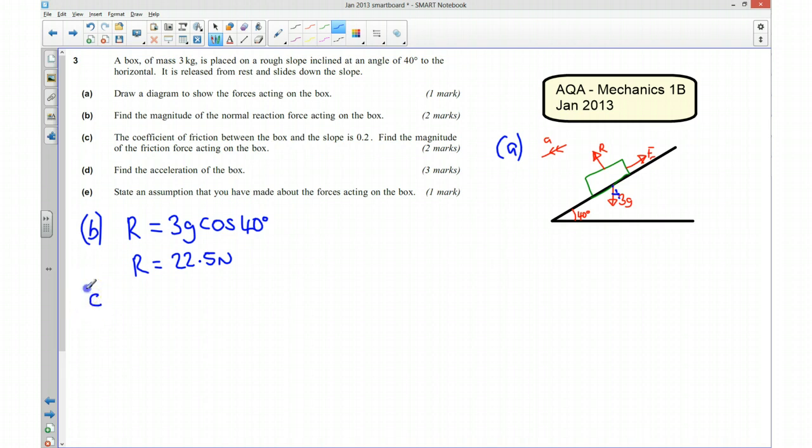Okay, for part C, we need to find the coefficient of friction between the box and the slope. So, sorry, we're told that the coefficient of friction between the box and the slope is 0.2. We want to find the magnitude of the friction force acting on the box. So, I'm going to write down that the frictional force, and because there is motion there, it's going to be at its maximum. So it's going to be mu times by the reaction force.